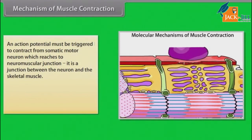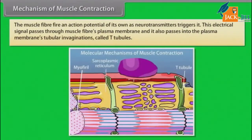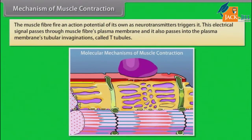The neuromuscular junction is a junction between the neuron and the skeletal muscle. Due to the depolarization of the axon terminal, it releases neurotransmitter acetylcholine into the synaptic cleft between the neuron and muscle. The muscle fiber fires an action potential of its own as neurotransmitters trigger it. This electrical signal passes through muscle fibers and into the plasma membrane's tubular invaginations called T-tubules.